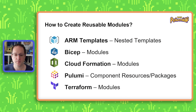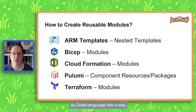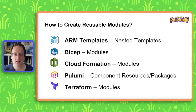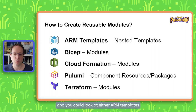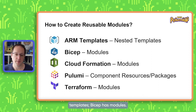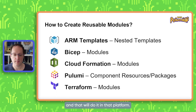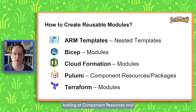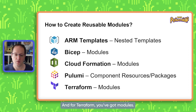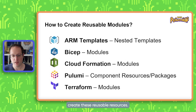So how do we create modules? Pretty much every infrastructure as code language has a way for you to create them. In the Azure space, you can look at ARM templates or Bicep — ARM templates have nested templates, Bicep has modules. AWS has CloudFormation modules. For Pulumi, which is what we're going to focus on today, we're looking at component resources, and then a further extension for packages if you want. And for Terraform, you've got modules. So whatever language you're using, you can find a way to create these reusable resources.